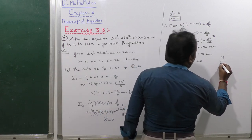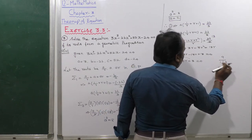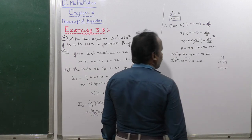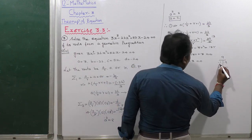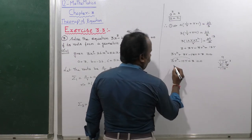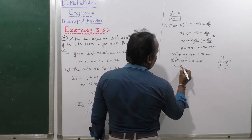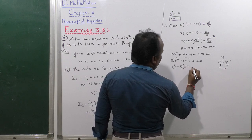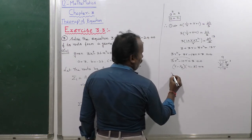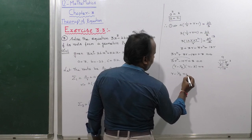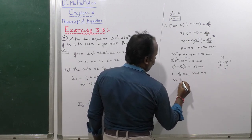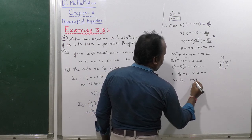Forming the quadratic equation: 3R squared minus 10R plus 3 equals 0. Multiplying factor is 9, and addition is minus 10, so split as minus 1 and minus 9. Factoring gives (3R minus 1)(R minus 3) equals 0. Therefore R minus 1 by 3 equals 0 or R minus 3 equals 0.